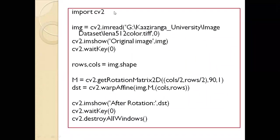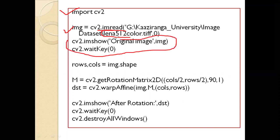This will be the overall code for our rotation operation. Import cv2 to import OpenCV, then input that image, read it and keep it in img using cv2.imread. I'm taking the Lena image that is kept in G drive, Kaziranga University folder, in the image dataset. Then I'm displaying the original image using cv2.imshow. I'm using the gray version here. Then I've calculated rows and columns from the image with img.shape.